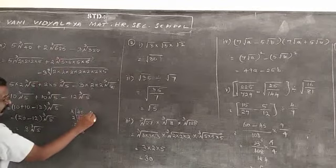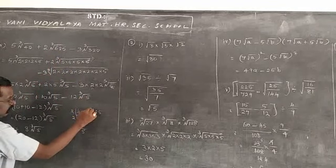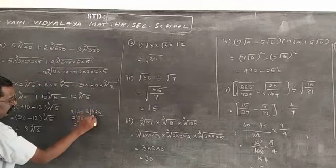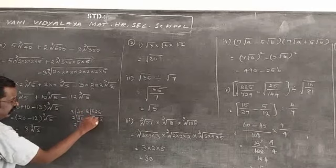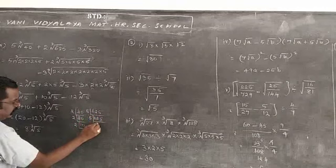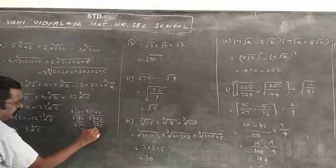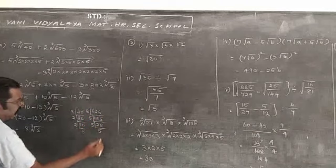Next, 625: 5 times 5 is 25, again 5 times 5 is 25, again 5 times 5 is 25. So 625 = 5 × 5 × 5 × 5, which is 5 four times.